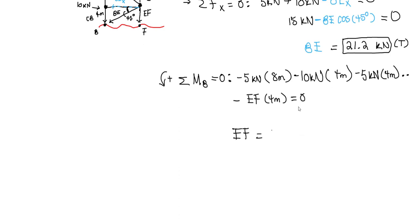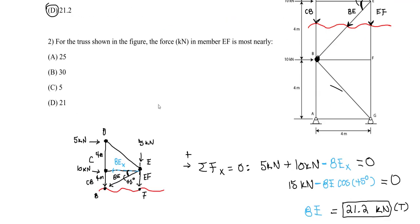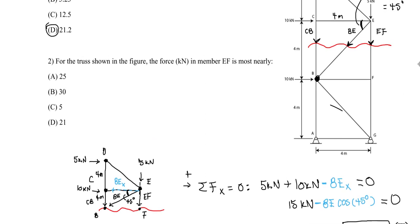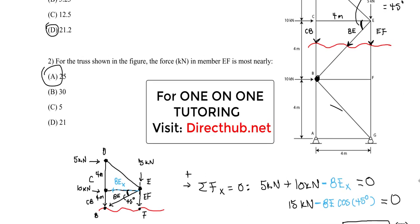Doing the math and solving for EF, we get approximately −25 kilonewtons. The negative sign tells us EF is actually in compression — we drew it in tension, but it means EF acts in compression. The answer choice for Part 2 is A. I hope this helps, and if you're interested in one-on-one tutoring, just reach out. Don't forget to subscribe and like. Take care.